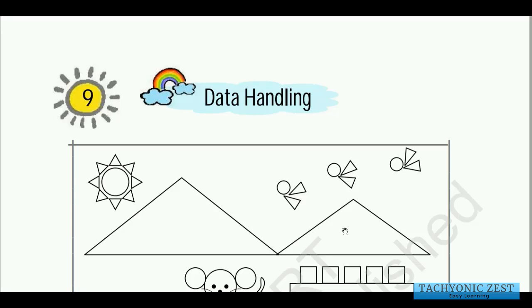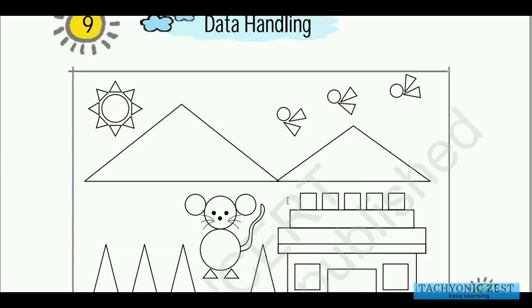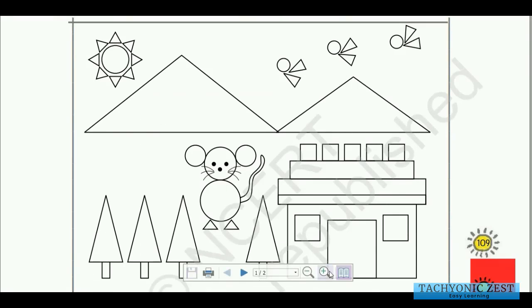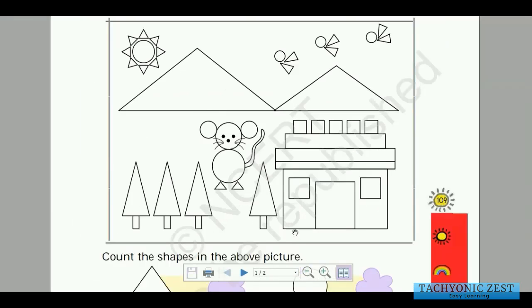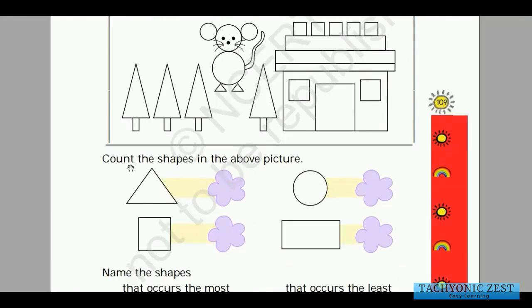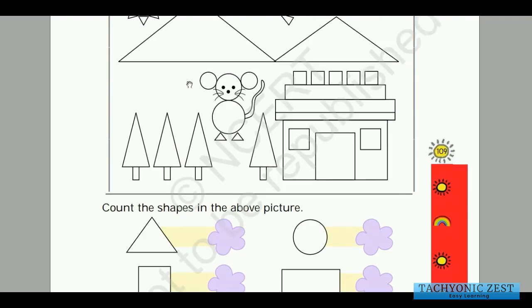Welcome to the next chapter. In this chapter we will study data handling — this is Chapter 9, and we are studying Mathematics Class 1. Here a picture is given with a few objects, and it is telling us to count the shapes in the picture. So we have to count the different kinds of shapes which are there.